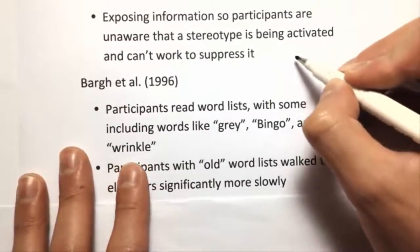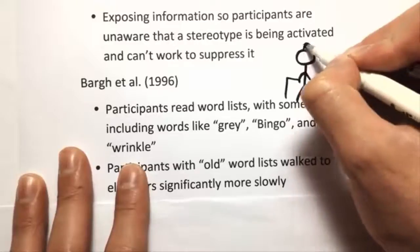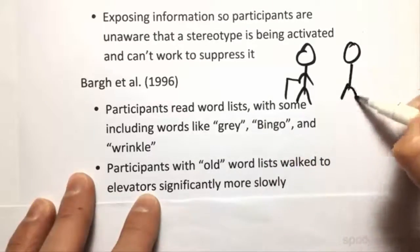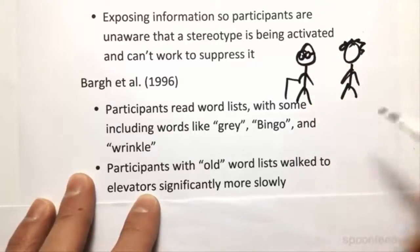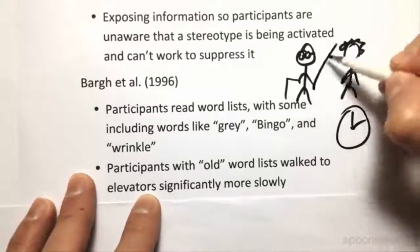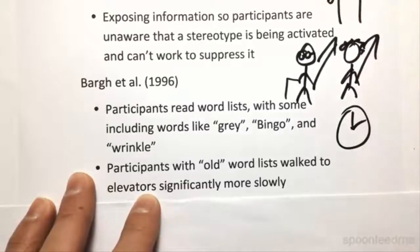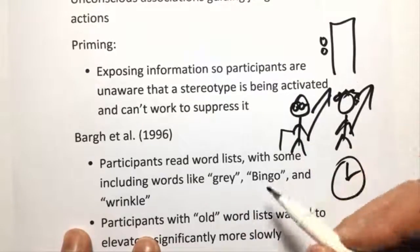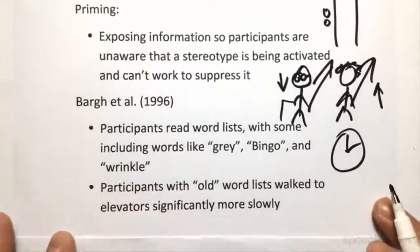Here's a little example. They basically gave people a list of old people words — grey, bingo, wrinkle — all these kinds of words embedded in word lists, as opposed to a control group with young, bright words. Then they timed them walking to the elevator. Those who were primed with the old people words took longer to get there than the control group who didn't have that priming.